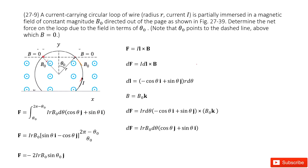It looks a little bit difficult, but I think we can solve it together. The magnetic force is F = IL cross B. This force is a vector, and L and B can both be written as vectors.